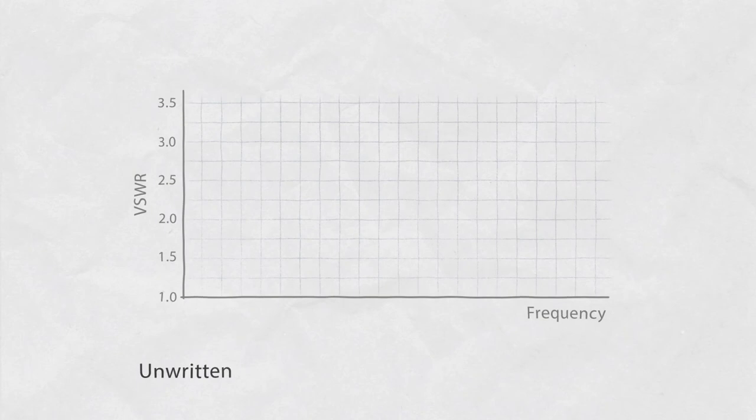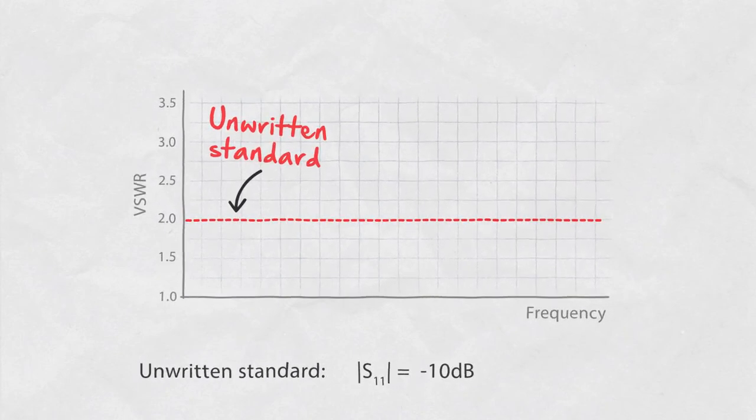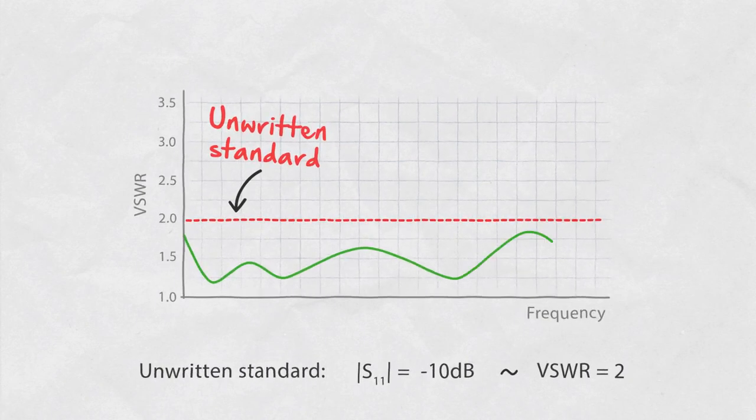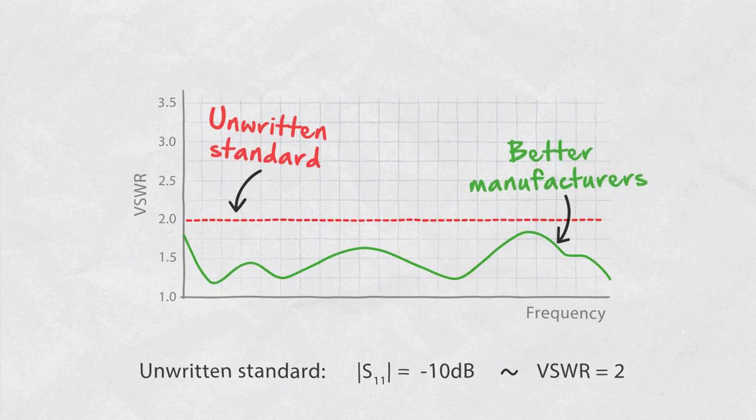In the world of RF engineering, the unwritten standard of good matching is S11 equal to minus 10 dB. In other words, the VSWR of two. More serious manufacturers, though, have often better standards to deliver high quality products.